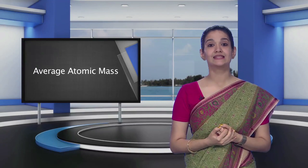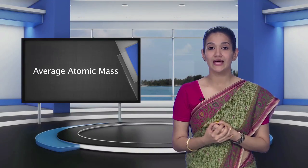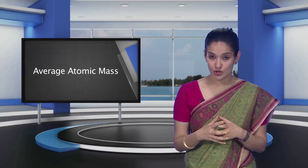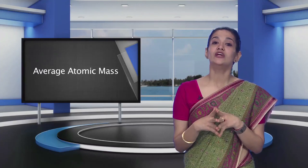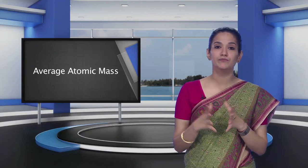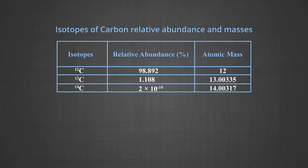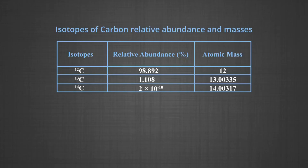Many naturally occurring elements exist as more than one isotope. When we take into account the existence of these isotopes and their relative abundance in nature (percent occurrence), the average atomic mass of that element can be computed. For example, carbon has three isotopes — carbon-12, carbon-13, and carbon-14 — with relative abundances of 98.892%, 1.108%, and 2 × 10⁻¹⁰, respectively, and masses of 12u, 13.00335u, and 14.00317u, respectively, as shown in the table.